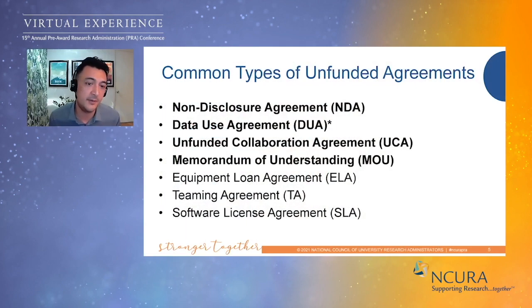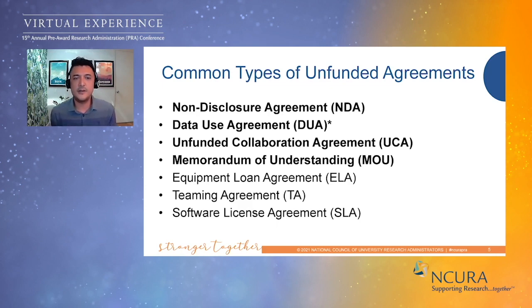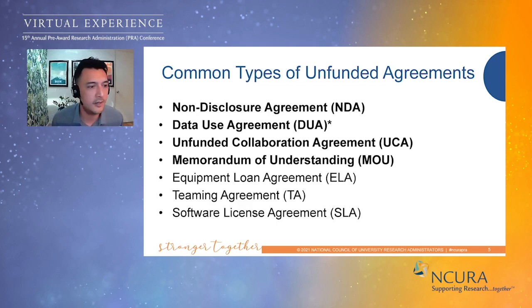Unfunded collaboration agreements are really what was discussed earlier — most of the time they're a full-blown research agreement with most of the same sections, but without a budget at the end because there's no actual funding being exchanged. Then there are memoranda of understanding, or MOUs. At Berkeley, many of these are international. We refer to them as handshake agreements — not necessarily legally binding, but really just to establish rights and responsibilities for us and our collaborator.